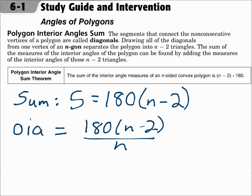For a polygon, the sum of the interior angles uses the formula S equals 180 times N minus 2. S is the sum of the interior angles, and N is the number of sides. For one interior angle of a regular polygon, you still do 180 times N minus 2, and then divide by N. Make sure you're paying attention to whether you need the sum of all of them, or just one of them.